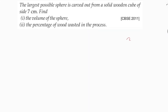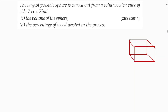So here I will take a cube whose edge is 7, and from this cube a sphere has been carved out. For the largest possible sphere, the diameter of the sphere will be equal to the edge of the cube, which is 7 centimeters. So diameter is 7 centimeters and radius will be 7 by 2 centimeters.